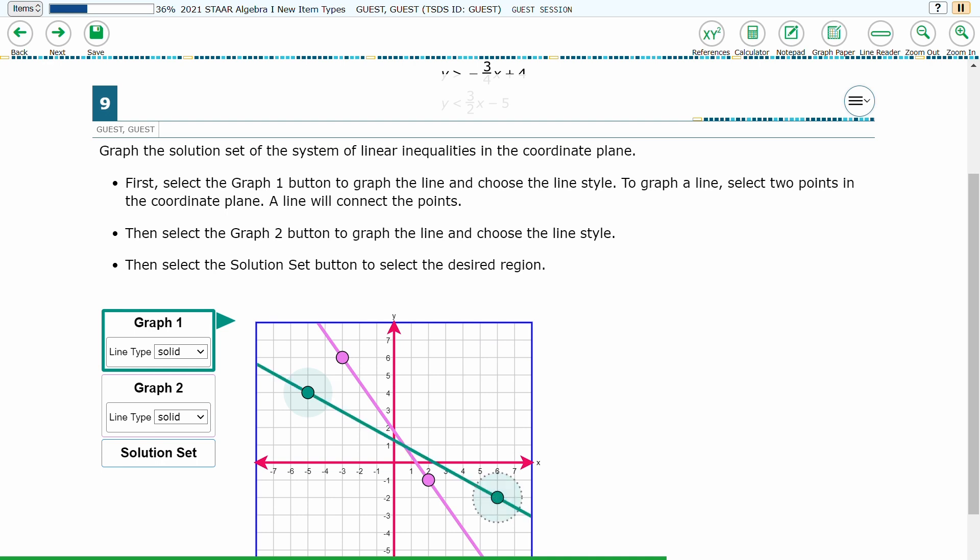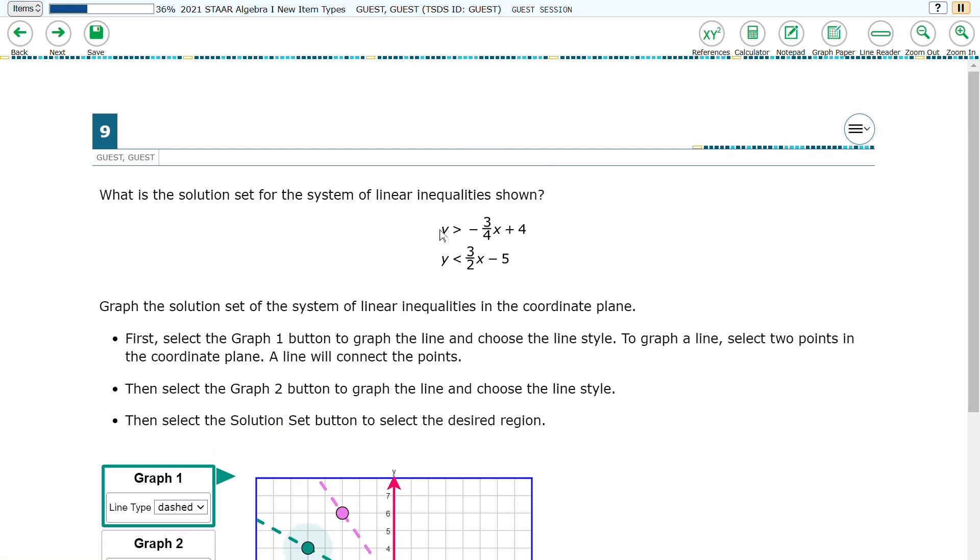For both graph 1 and graph 2, the student must designate a line type, solid or dashed, determined by the inequality being graphed.